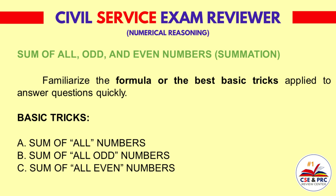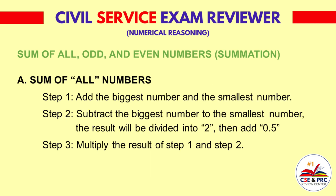1. Sum of All Numbers. 2. Sum of All Odd Numbers. 3. Sum of All Even Numbers. A. Sum of All Numbers. Step 1: Add the biggest number and the smallest number. Step 2: Subtract the biggest number from the smallest number, divide the result by 2, then add 0.5. Step 3: Multiply the result of Step 1 and Step 2.